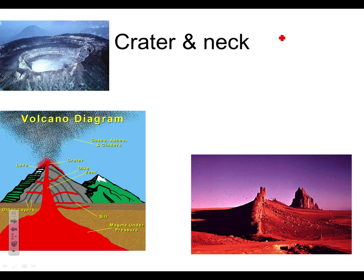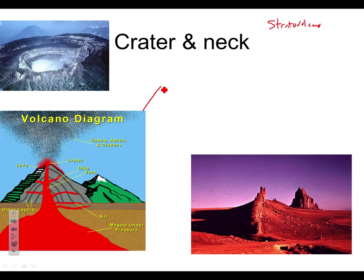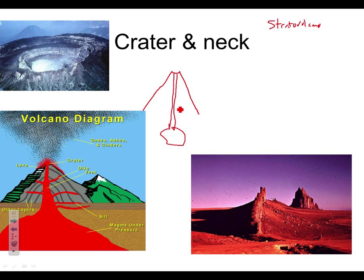Let's draw our diagram of our stratovolcano. Flip your paper over and label it 'stratovolcano.' We're going to draw a steep volcano — more steep than the shield volcano. Draw a very steep volcano with a depression at the top, and put your pipe going down the middle. The main pipe from the magma chamber to the summit is called the conduit — go ahead and label it. Same part as we had with the other one.